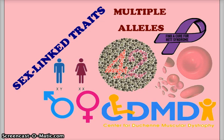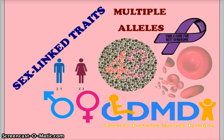Hello, and today for biology, continuing with our work in Mendelian genetics and heredity, we're going to look at another multiple allele situation. In this case, the multiple allele situation we're going to look at is what is called sex-linked traits — those are traits that are directly linked to the X or Y chromosomes that determine the sex of an organism.